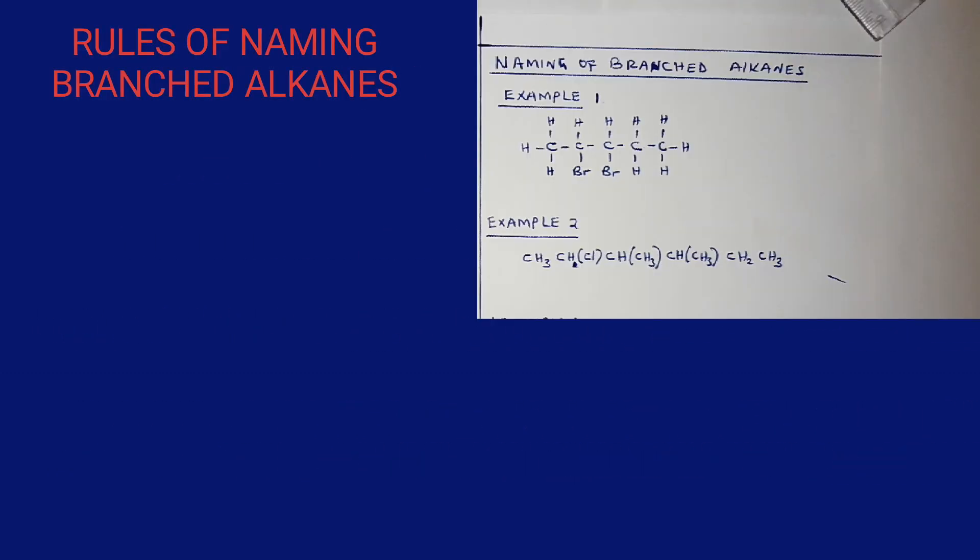Now to be able to name branched alkanes, there are rules or guidelines to follow. Number one: identify the longest continuous carbon chain that gives you the parent name.